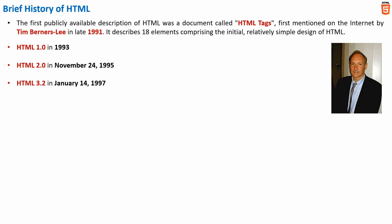Then HTML 3.2 was released on 14 January 1997, with W3C recommendation. This was the first version developed and standardized exclusively by W3C. HTML 3.2 dropped math formulas entirely. The blink element from Netscape and the Microsoft marquee element were both completely omitted due to a mutual agreement signed between Netscape and Microsoft.